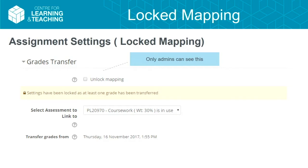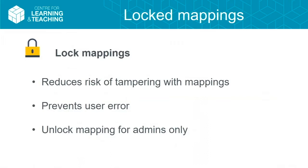The main reason behind locking the mappings is: if a teacher creates a mapping into the student record system, does some transfers, realises they made a mistake, goes back in, changes it, and then does more transfers — they're basically scattering their grades throughout the student record system and it's going to be a nightmare to correct. So we created something where if somebody makes a mistake, they can only make it once and then go and speak to somebody who can actually fix it.